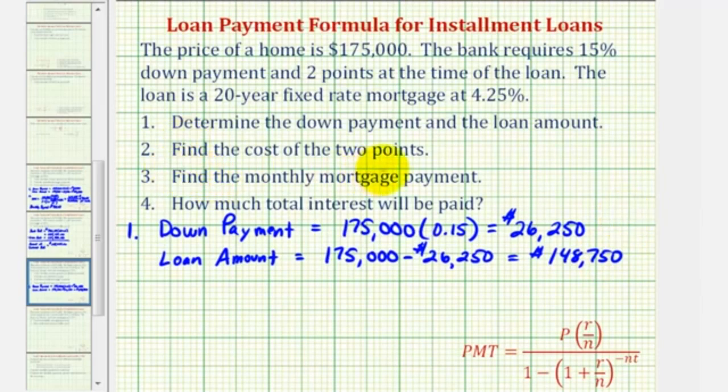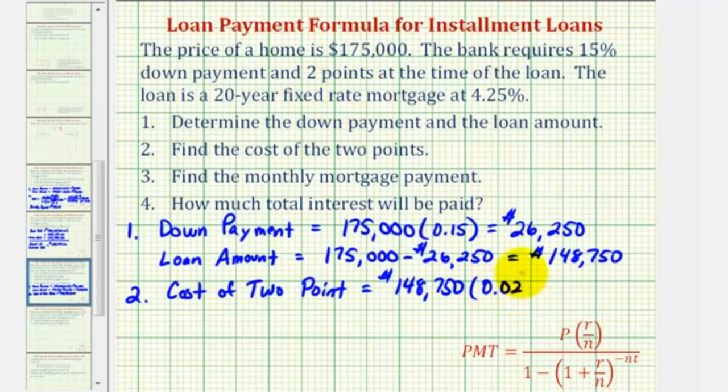For number two, we want to determine the cost of the two points. If a loan has points, it has extra costs attached to it. For every point, you pay an extra 1% of the loan amount. So the cost of the two points will be 2% of the loan amount, or 2% of $148,750. So $148,750 times 2% expressed as a decimal, which would be 0.02, comes out to $2,975.